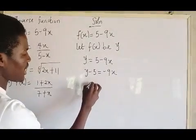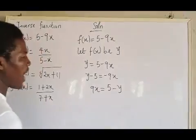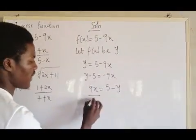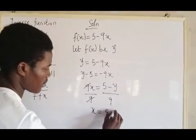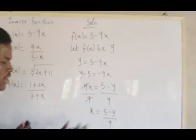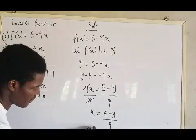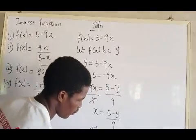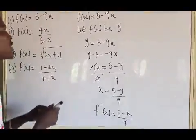Then nine X equals five minus Y — you multiply through by negative one. Don't forget we are trying to make X the subject of the formula, so divide by nine. Nine cancels, and your X equals five minus Y over nine. Now we want to find F inverse, so you replace X with F inverse of X and replace Y with X. So F inverse of X equals five minus X over nine. That is the inverse function.